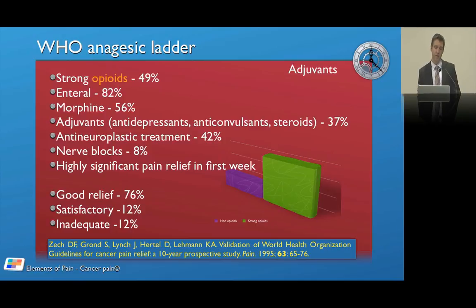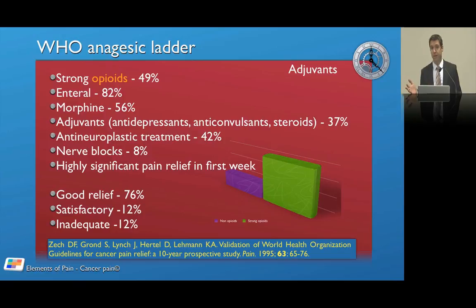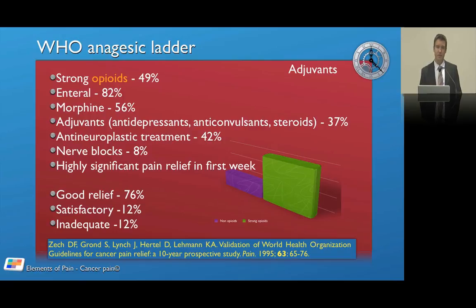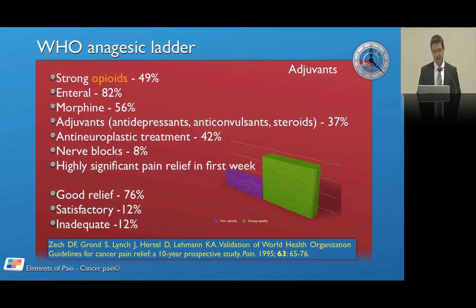Nerve blocks were required in only about 8% of patients in that 1995 study, compared to about 20-30% in the first validation study. As we get better at managing cancer pain and using different opioids, fewer patients are requiring nerve blocks — though nerve blocks still form an important part of pain specialist practice. A significant pain relief was found in the first week of starting therapy — 76% had good pain relief, 12% satisfactory, and 12% inadequate. That 12% inadequate is still a huge number. We need to do better.